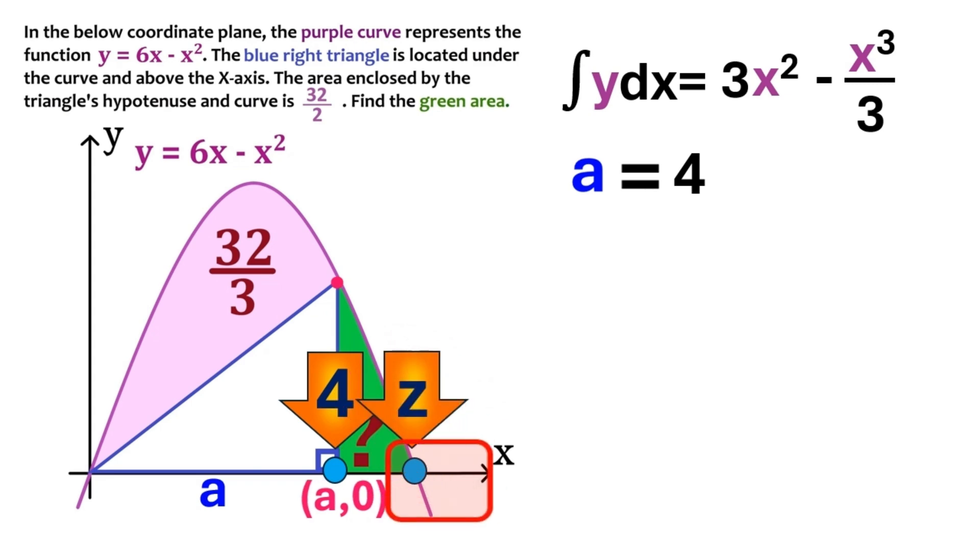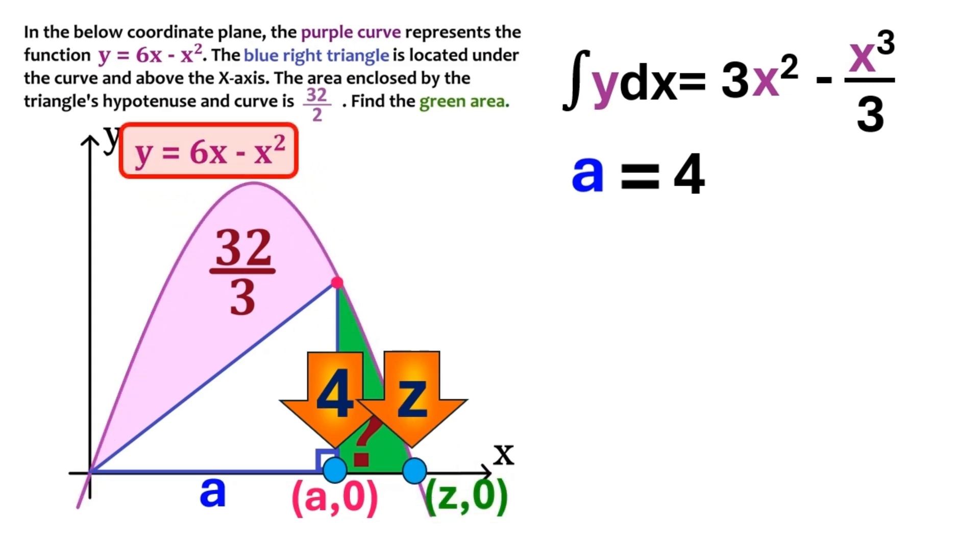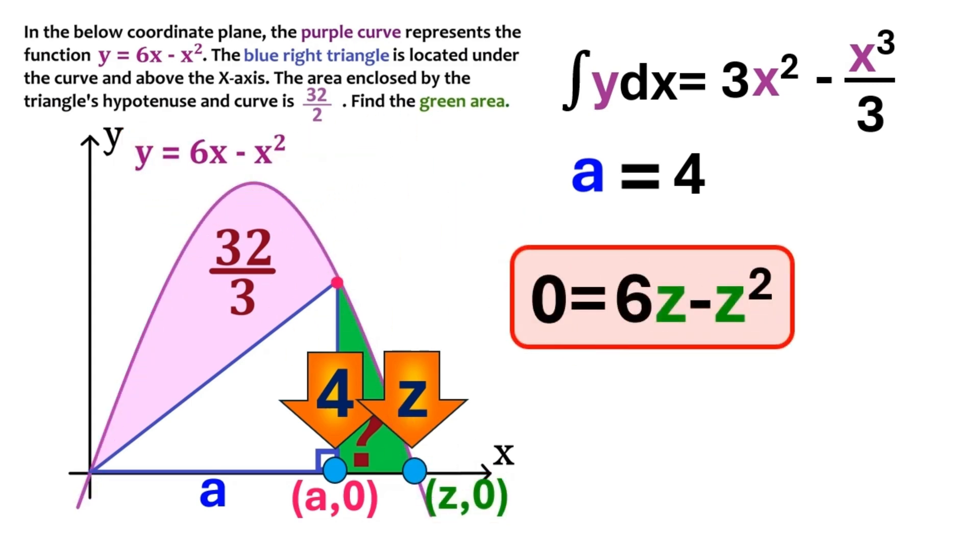Which means this point's coordinates are z0. And it is clear that the point is on the purple curve. So we can take these coordinates and put them into this function. Which gives us this equation. And factorizing it like this, we figure out that z is either 0 or 6.